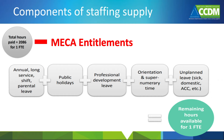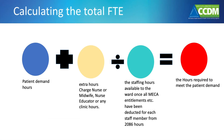For the FTE calculation, all MECA entitlements are provided for. Once this is calculated and deducted, the hours that are left are the hours the staff member actually has available to provide to the ward's nursing or midwifery workforce. The FTE calculation is: patient demand hours plus extra hours required for the ward — such as charge nurse or midwife hours, nurse educator, or clinic hours — divided by the staffing hours available to the ward once all MECA entitlements have been deducted from 2,086 hours.